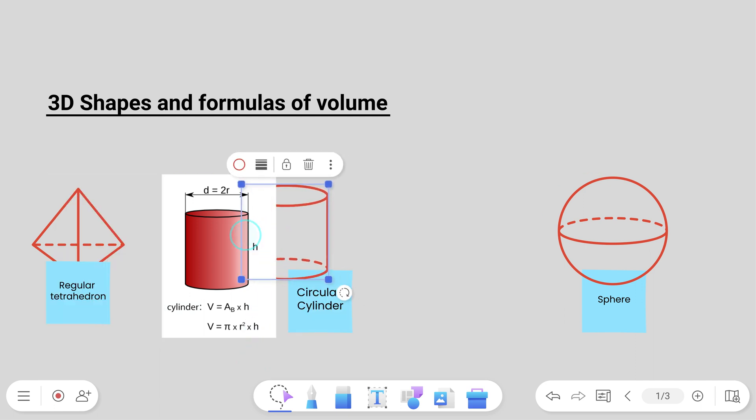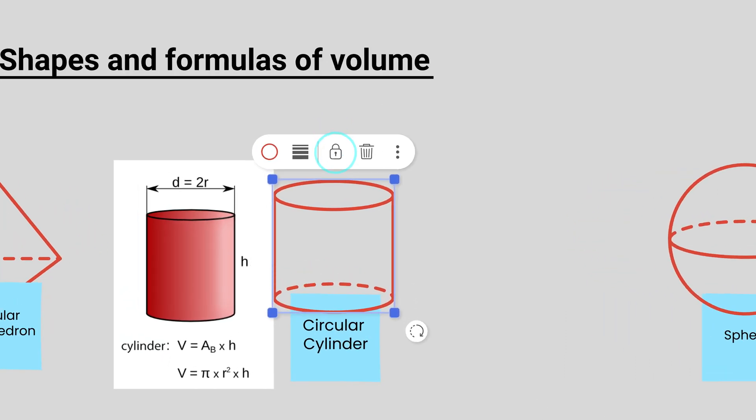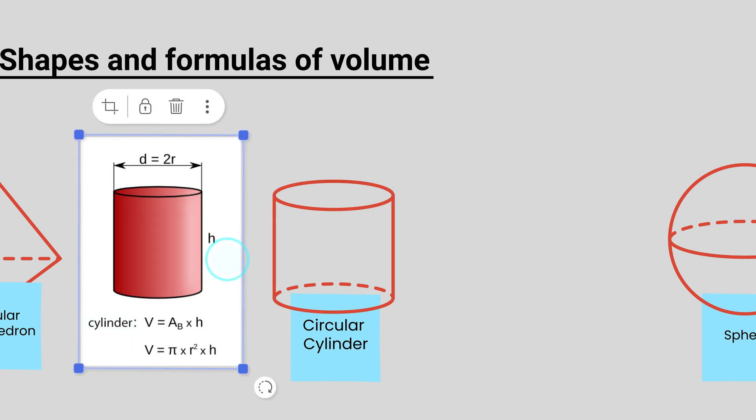Working with several objects can get tricky, especially when you accidentally move items you want to keep in place. To prevent this, you can use the lock tool to fix the object's position on the board.